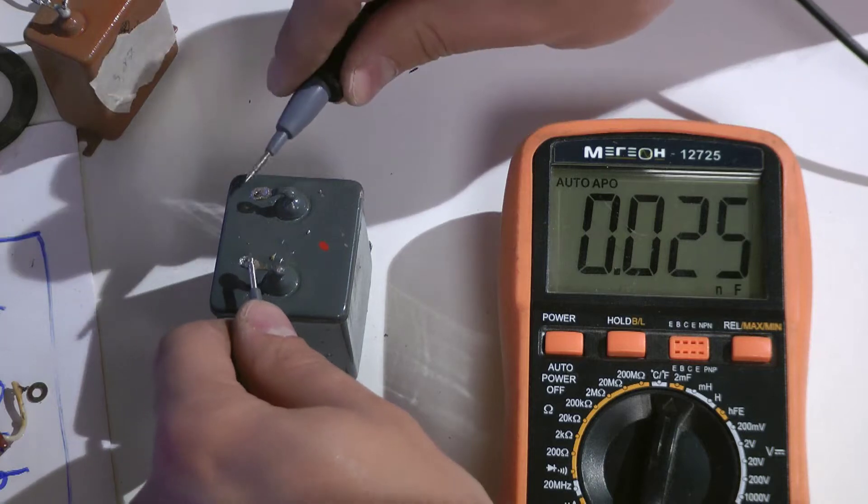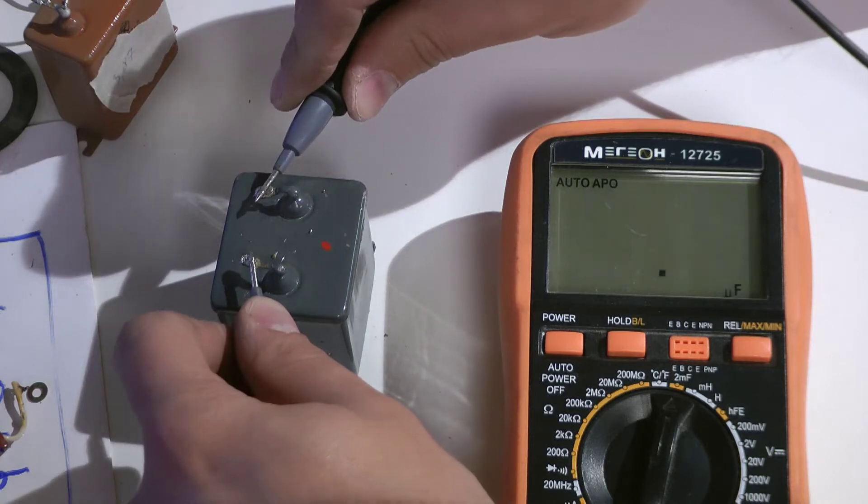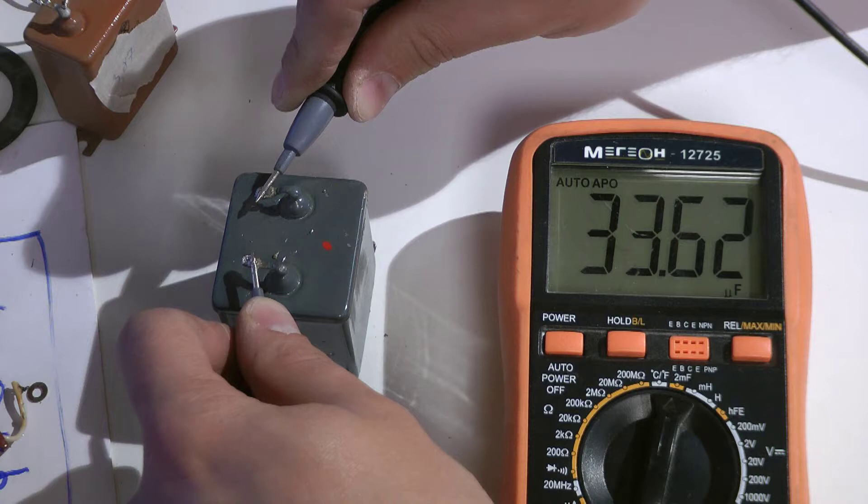I measure the value of all capacitors and write down their exact values. As you can see, the denomination will almost always differ by 10%.